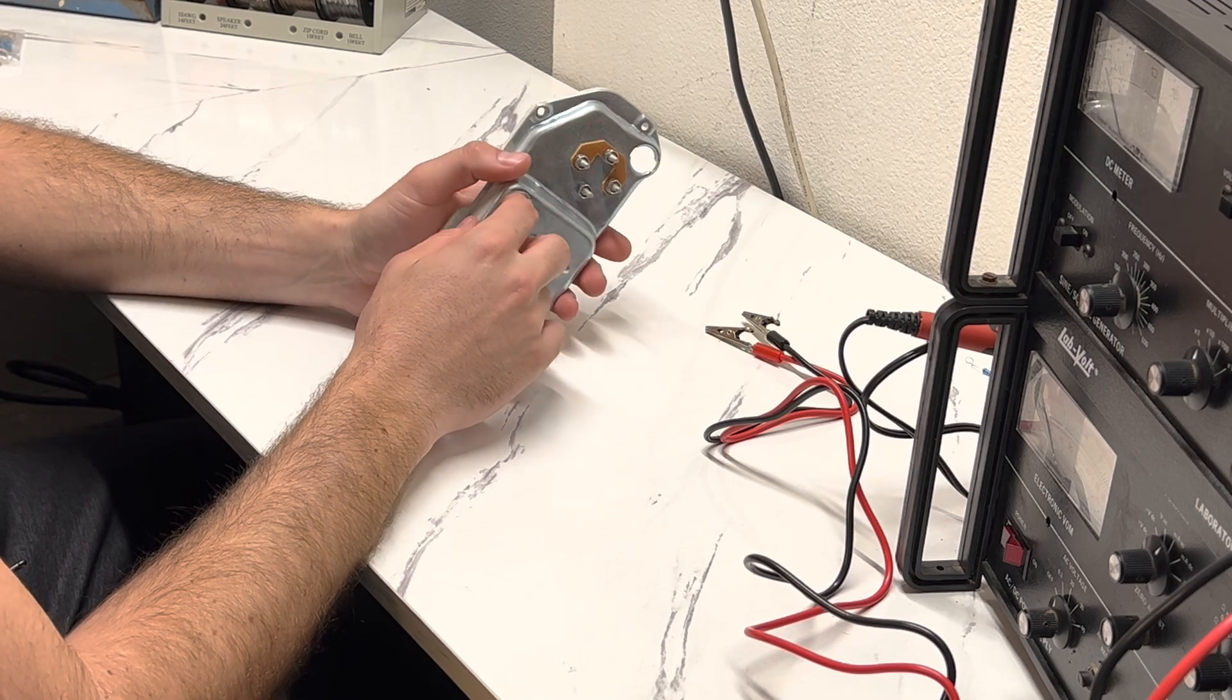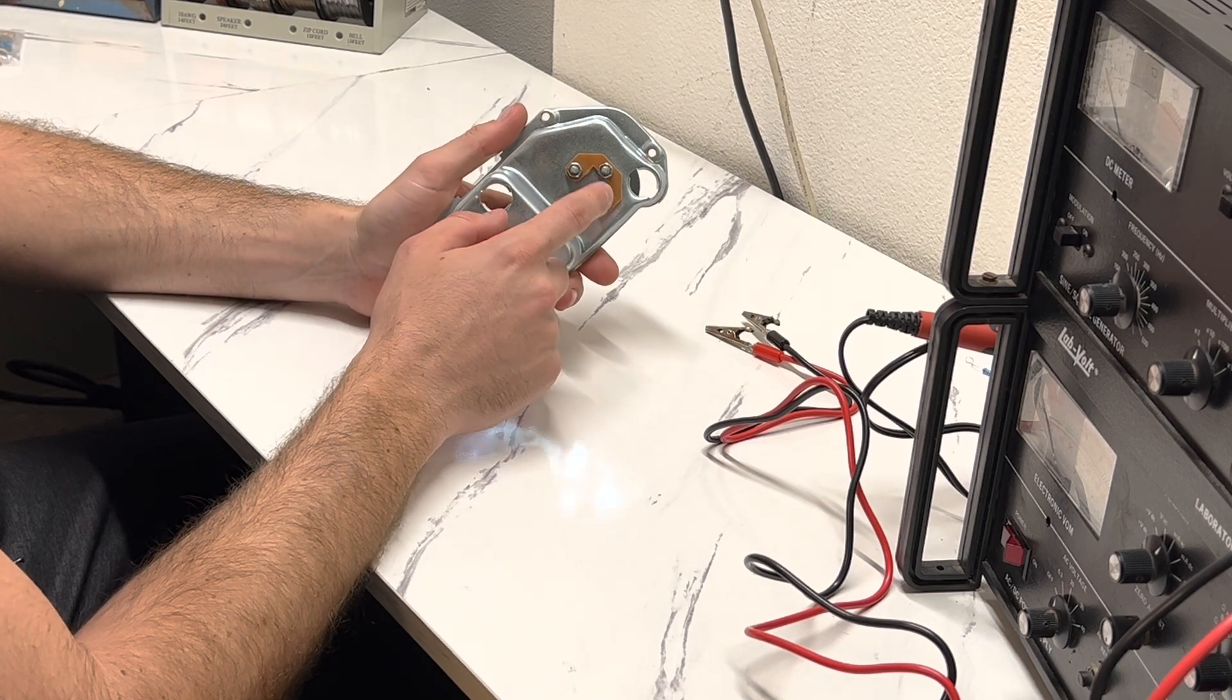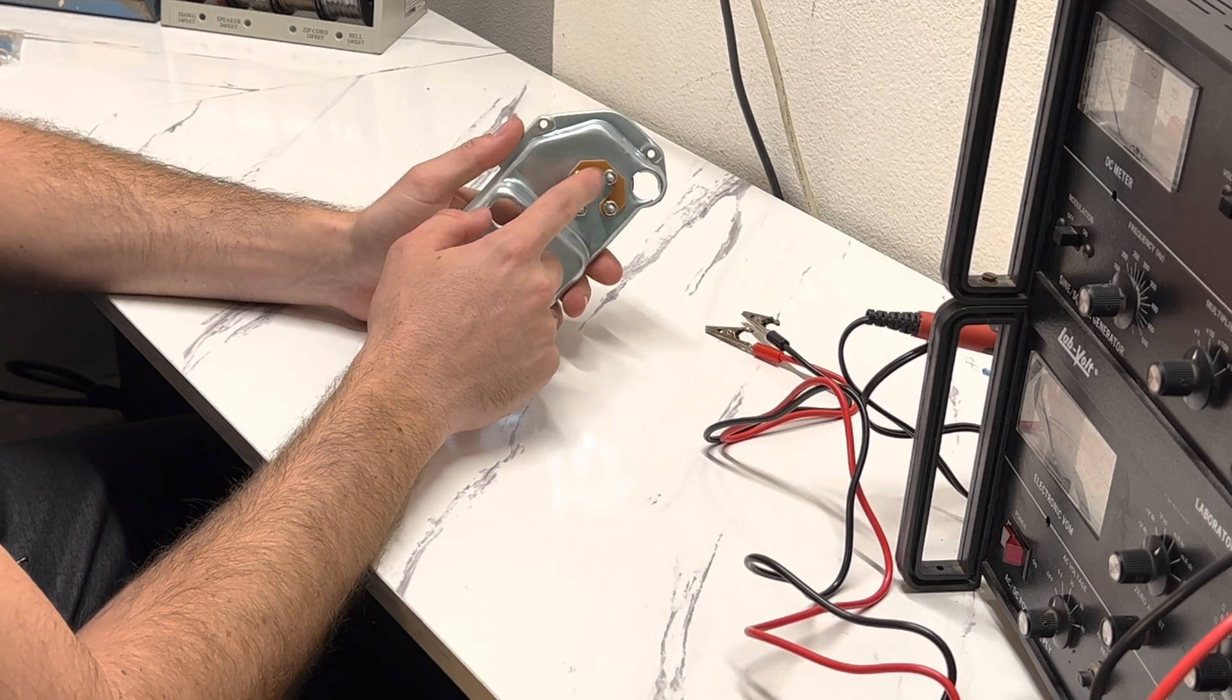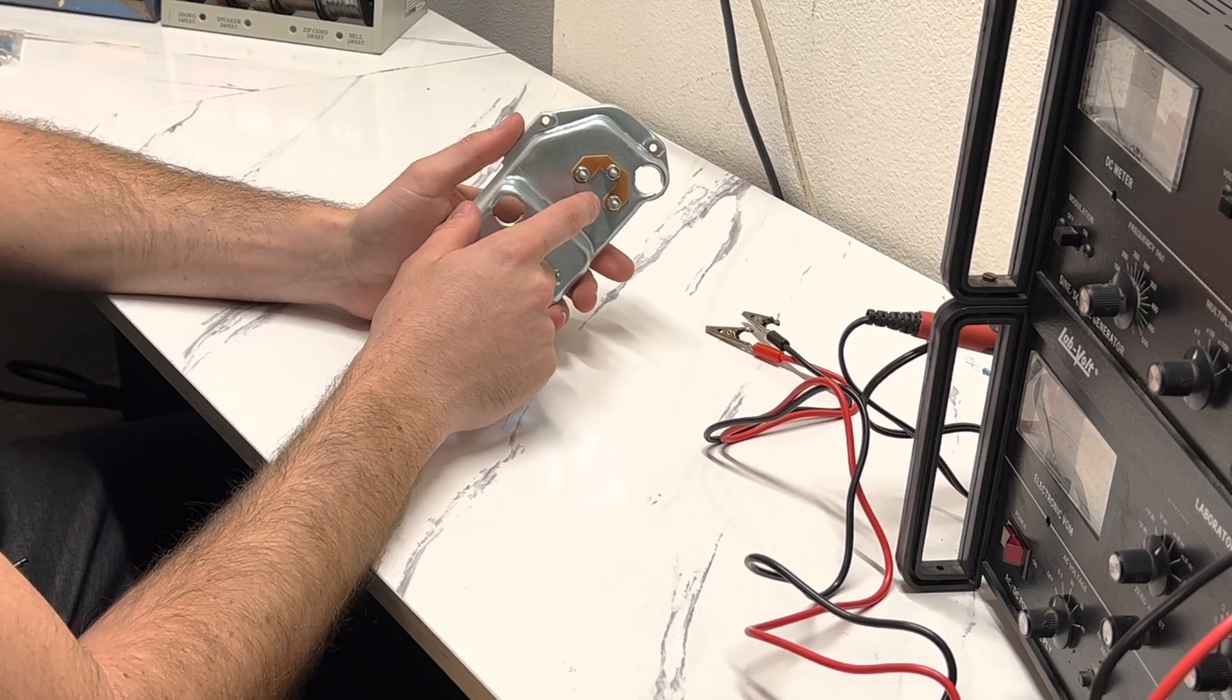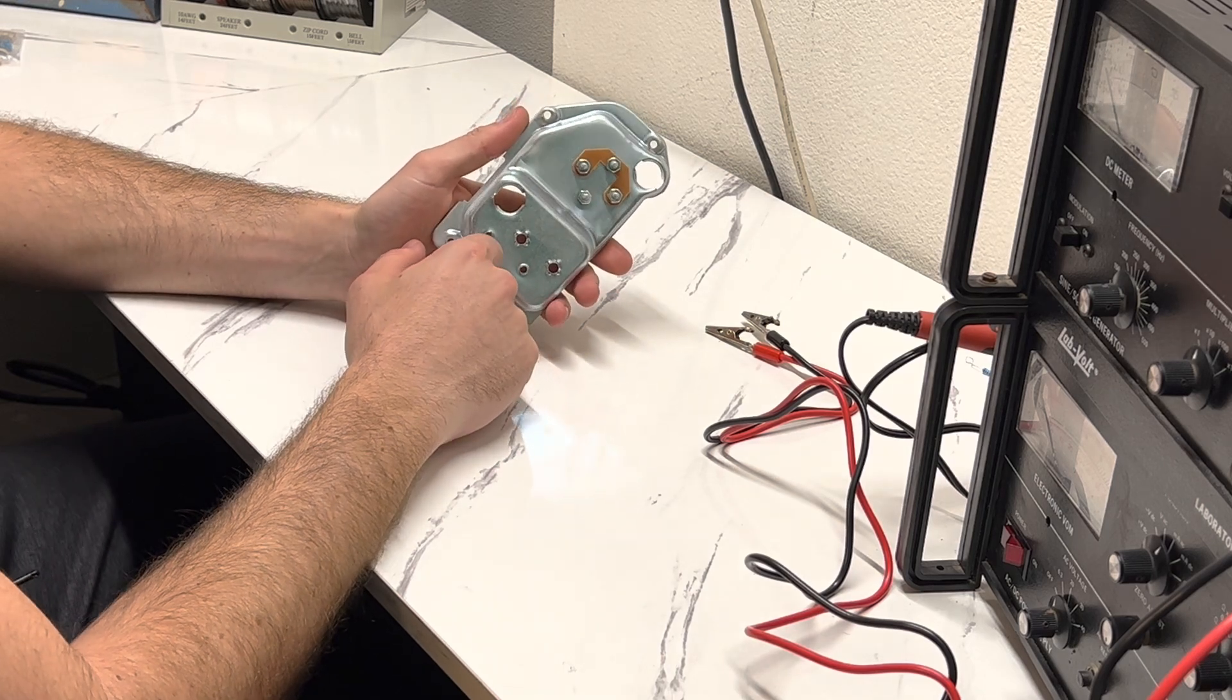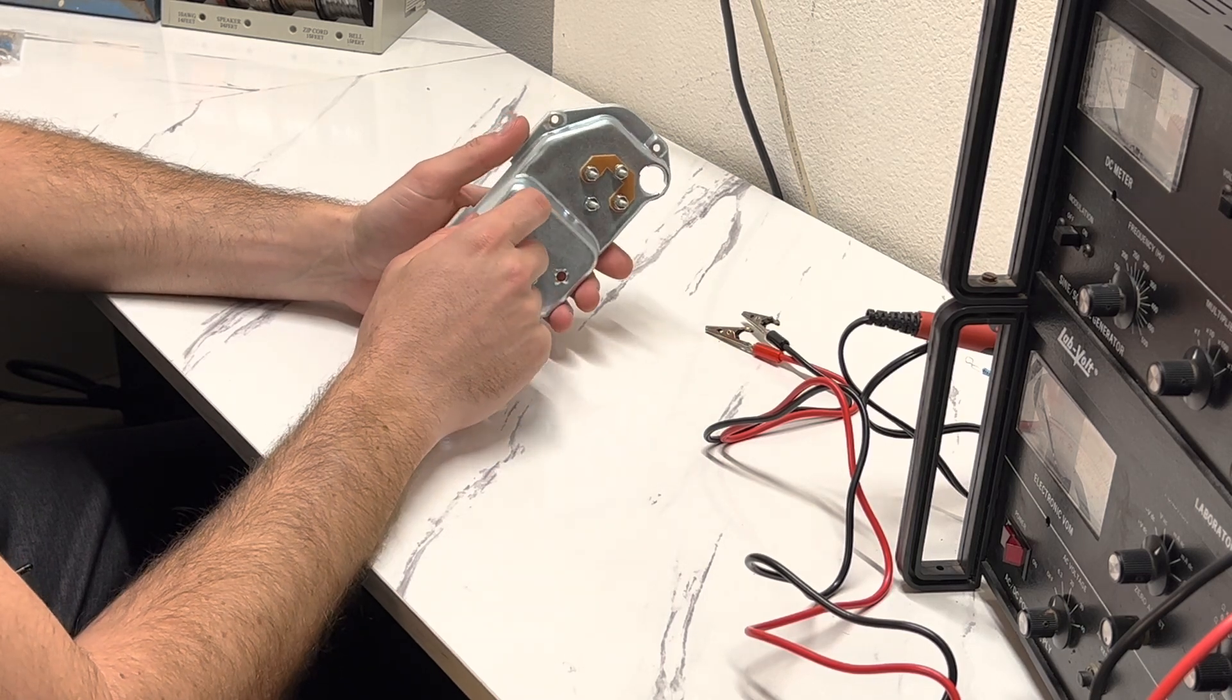This is an aftermarket gauge. I know on the original ones there's a resistor that runs between the top and bottom prong, but since this is an aftermarket replacement for an OEM gauge, this resistor is not here. So take note of that if you are testing an original gauge, make sure that resistor is there, and just make sure everything is set up correctly.